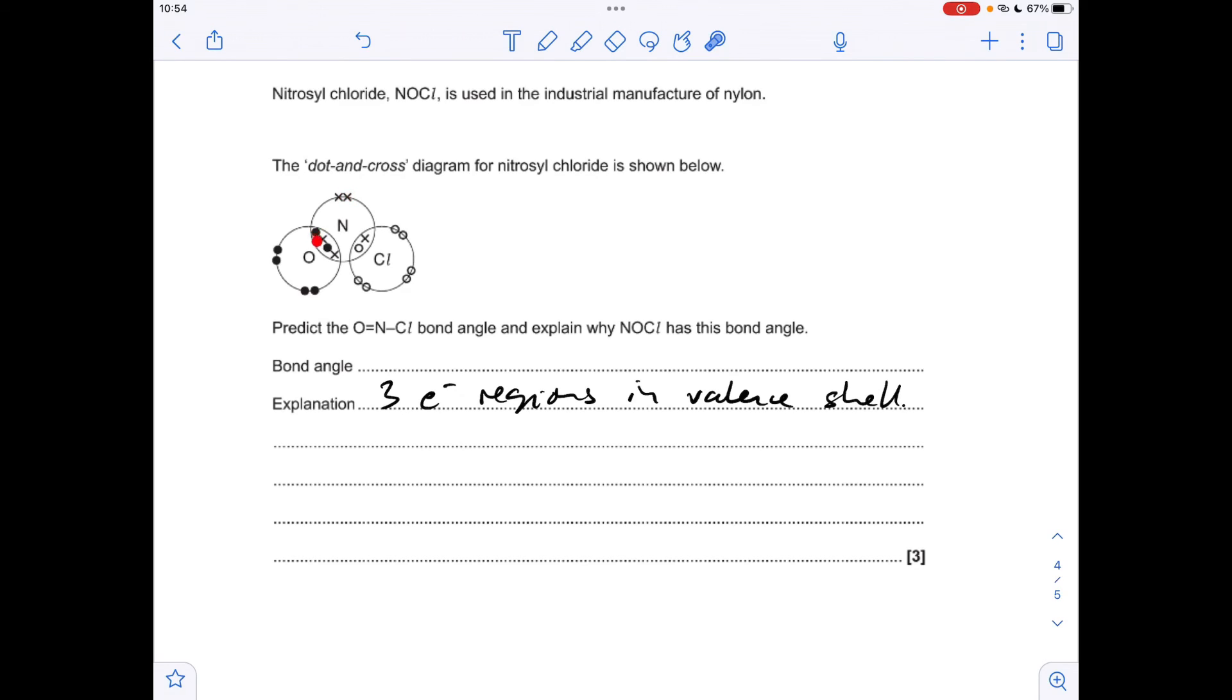Next thing we need to do is talk about repulsion. Is it equal or not? Well it's not going to be equal because you've got a lone pair in there which repels more than these bonding regions. In terms of the angle, if we've got three electron regions our starting angle is 120 degrees, but with one lone pair we would take two and a half degrees off that, so our bond angle is going to be 117.5 degrees.